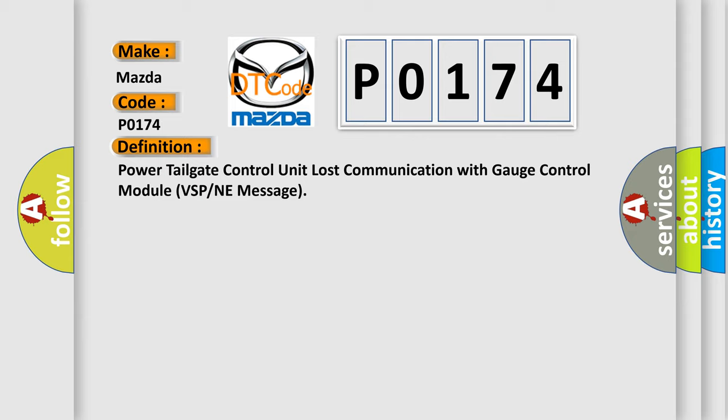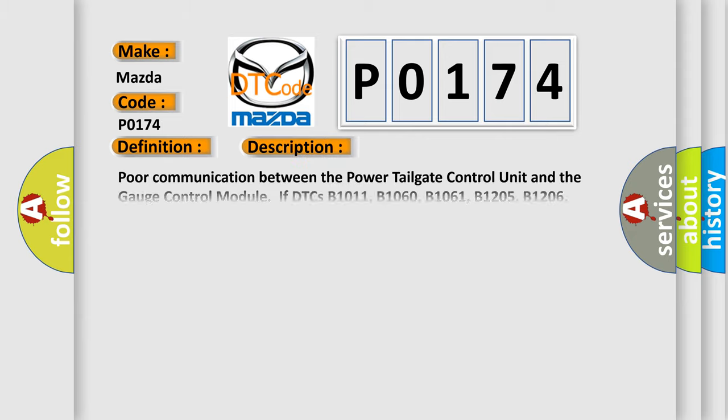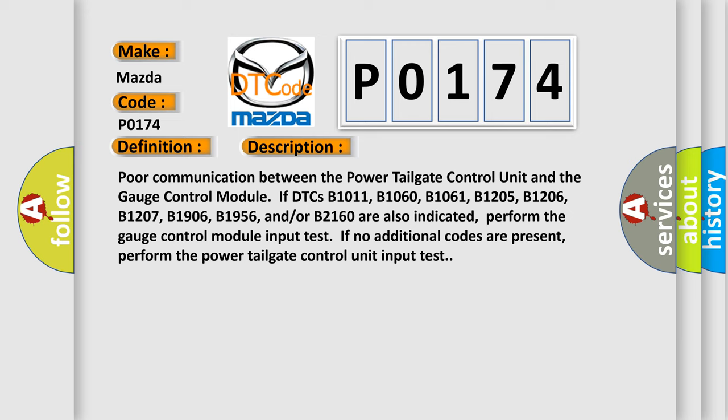Here is a short description of this DTC code. Poor communication between the power tailgate control unit and the gauge control module. If DTCs B1011, B1060, B1061, B1205, B1206, B1207, B1906, B1956, and/or B2160 are also indicated, perform the gauge control module input test. If no additional codes are present, perform the power tailgate control unit input test. This diagnostic error occurs most often in these cases.